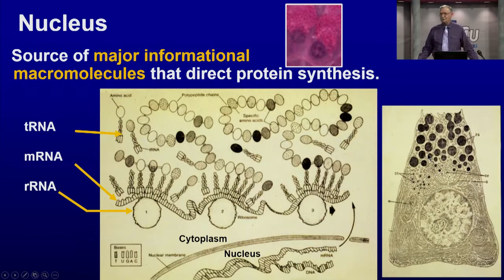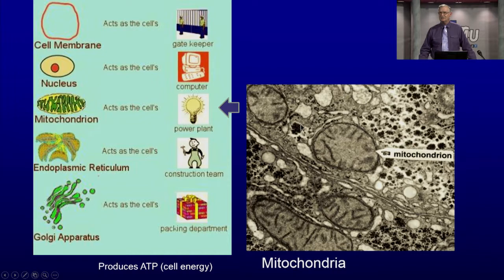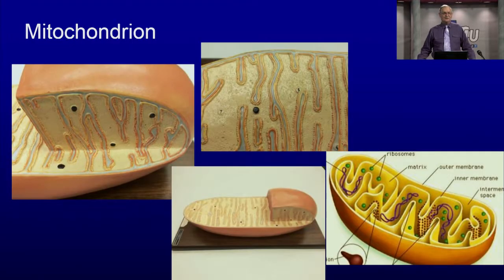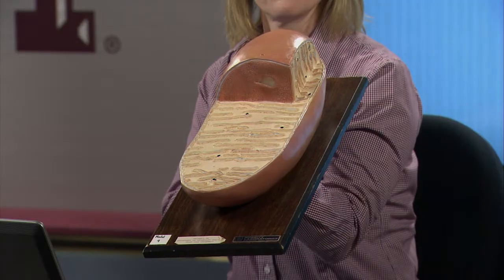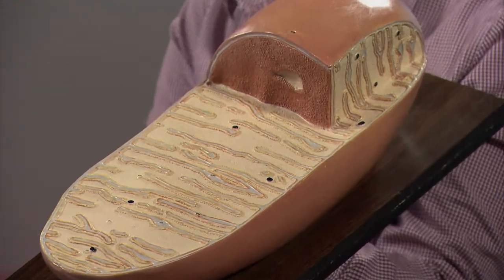The nucleus passes information via messenger RNA to the cytoplasm, and the cytoplasm makes various structures such as secretory granules. There's also mitochondria — the power plant of the cell — which produces ATP energy. Here we can see the mitochondrion; it has a double membrane, and inside there are little structures associated with respiration.